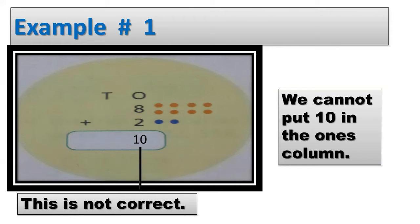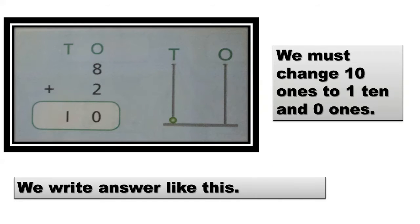So the answer comes 10, so here we write 10. This is not correct — we know that the answer is 10, but we cannot put 10 in the 1s column. The greatest number we can put in the 1s column is 9. Here 10 is greater than 9, so we must change 10 1s into 1 ten and 0 1s. Here we put 0 in the 1s column and 1 in the 10s column. This is correct.